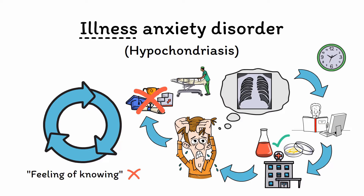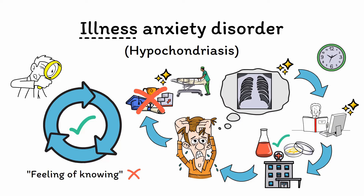Looking at this pattern, we can see why illness anxiety disorder is best thought of as an OCD spectrum disorder. It features the same loop between an obsessive thought — in this case a belief that one has a medical disease — and compulsive behaviors, such as checking for signs of the disease over and over, that directly lead to distress and dysfunction. Rather than memorizing the diagnostic criteria, the highest yield approach when diagnosing illness anxiety disorder is simply to look for this pattern.